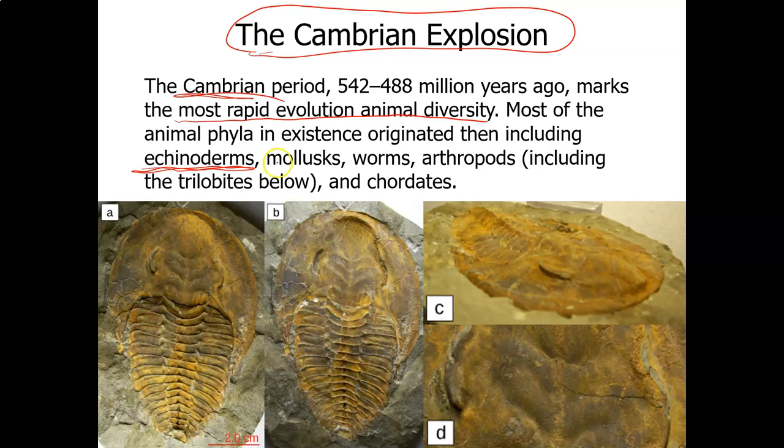The mollusks, which are soft-bodied. That includes the squid, the octopus, the clam, oysters, snails, slugs. All of these are mollusks. The worms, there are different worms. There are flatworms. There are segmented worms. And there are roundworms. So we have three phyla of worms.